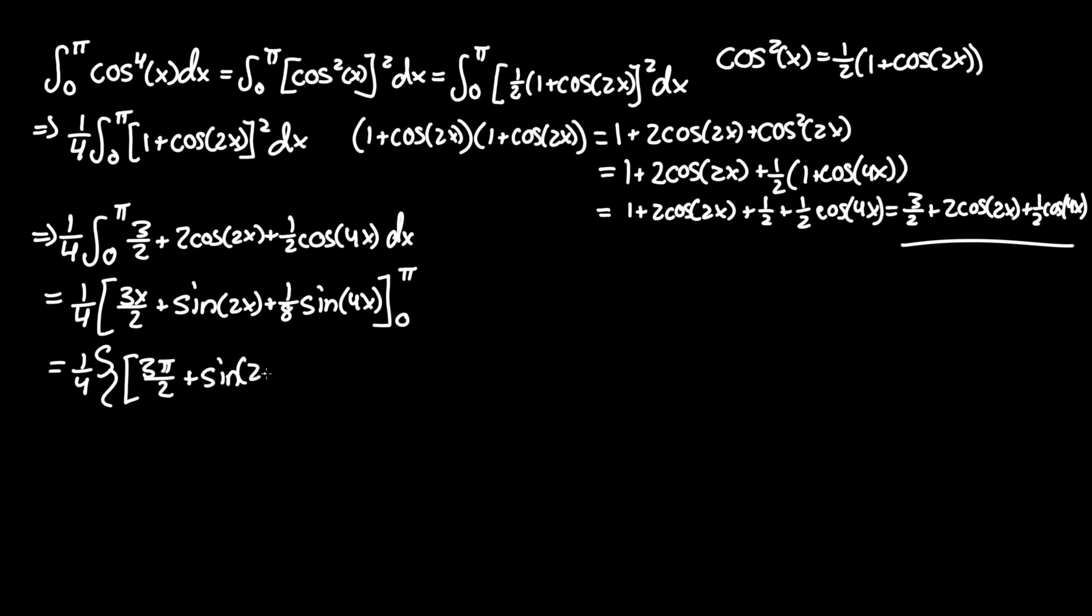minus the 0 boundary: 3/2 times 0 which is 0, plus sin(0) plus 1/8 sin(0)].